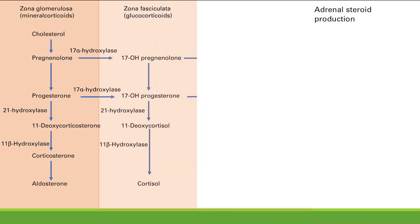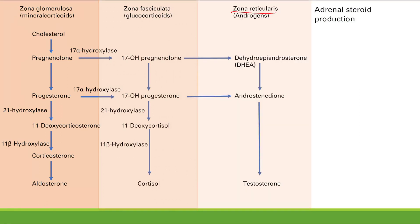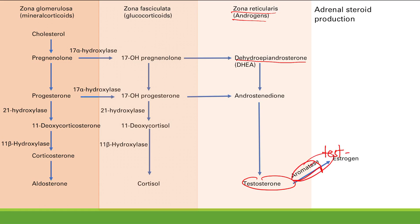The zona reticularis makes sex hormones, especially androgens. DHEA is converted to androstenedione, which is eventually turned into testosterone. Testosterone can then leave the adrenal gland and be converted to estrogen by aromatase, or to dihydrotestosterone (DHT) — a very potent form of testosterone — by 5-alpha reductase.